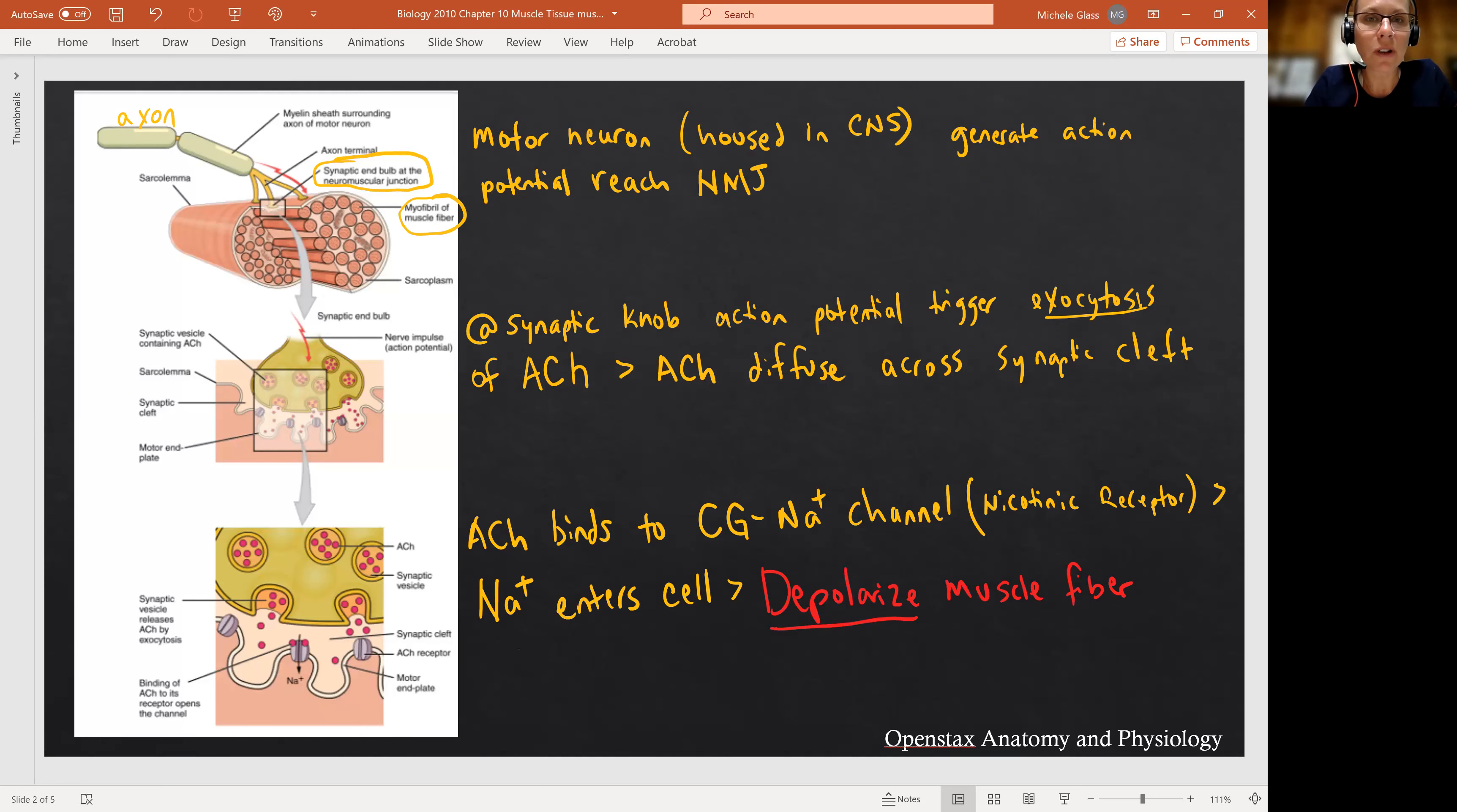Acetylcholine is going to diffuse across that synaptic cleft. So that's the space in between these two cells. And then embedded in the motor end plate of the skeletal muscle fiber are those chemically gated sodium channels. The acetylcholine will bind with those channels, that triggers those channels to open and sodium floods into the muscle fiber. And that is going to change the charge of the muscle fiber. That's going to depolarize the muscle fiber.